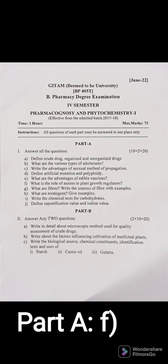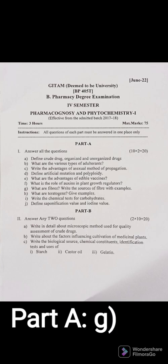Question 1G: What are fibers? Write the sources of fibers with examples — remember, examples are required. Fibers are raw materials directly obtained from plant, animal, and mineral origins. Examples: cotton — botanical name Gossypium herbaceum, family Malvaceae; jute — botanical name Corchorus capsularis, family Tiliaceae.